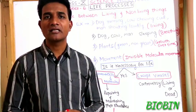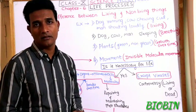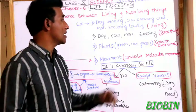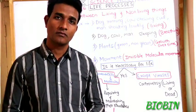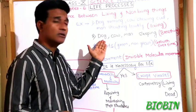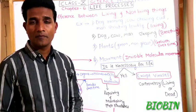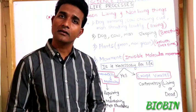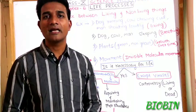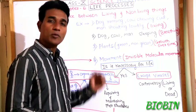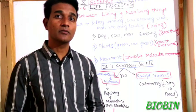How can we differentiate living things and non-living things? We take examples of a dog running, a cow chipping, and a man shouting loudly — we say they are all living organisms. But when we take the dog, cow, or man who is sleeping, how can we say they are living? By taking an important character — breathing — we say they are living organisms.